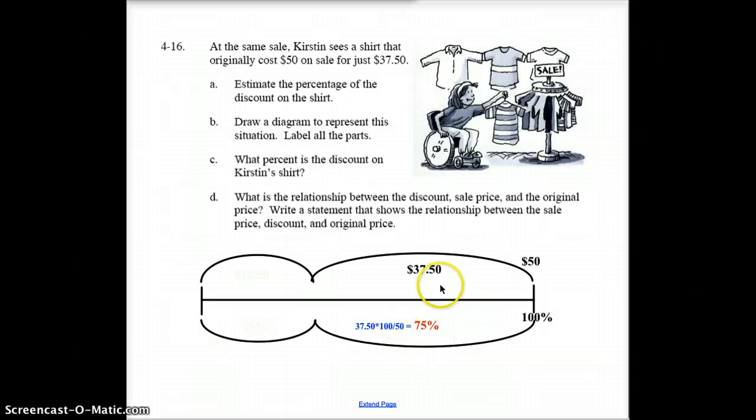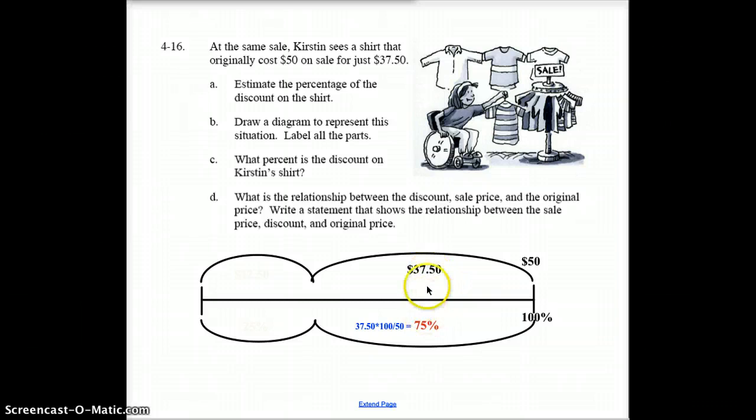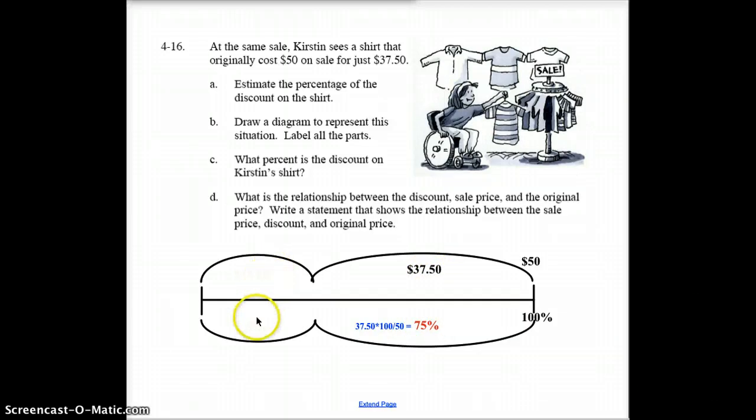So it's on sale for $37.50. That's how much she's going to pay for it. The amount that she saved would be the 100 minus 75% that she paid, which would be 25%. The amount of money that she saved, 50 minus $37.50, would be $12.50. I think that pretty much answers all the questions they're asking up here. Hopefully, that's starting to make sense how to set this up.